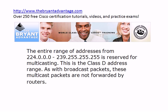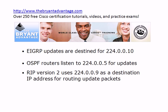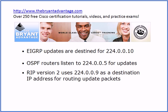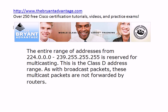You probably noticed a pattern in those addresses — they all begin with 224.0.0. Multicast addresses don't have to begin with 224, but many common ones in Cisco networking do have a first octet of 224. The entire range of addresses on the whiteboard here is reserved for multicasting — this is the Class D address range. And just as with broadcast packets, these multicast packets are not going to be forwarded by routers. There are exceptions we can configure, but as a rule, broadcast and multicast packets are not forwarded by routers.